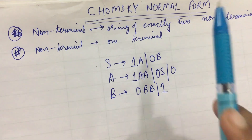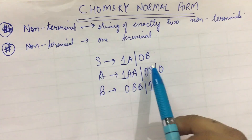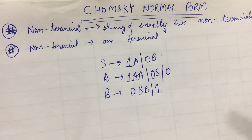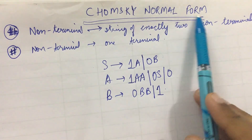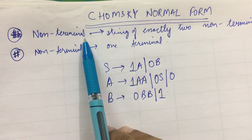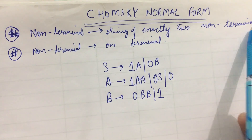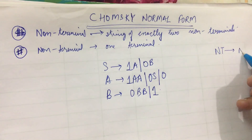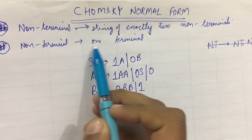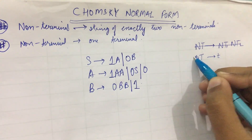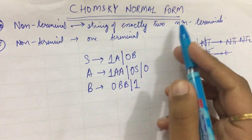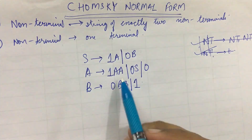We will convert a given CFG (context-free grammar) to a CNF (Chomsky normal form). A Chomsky normal form has two conditions: either a non-terminal leads to a string of exactly two non-terminals — that is, a non-terminal giving non-terminal-1 and non-terminal-2 — or a non-terminal leads to a single terminal. These two conditions must be fulfilled by a grammar which is in CNF.